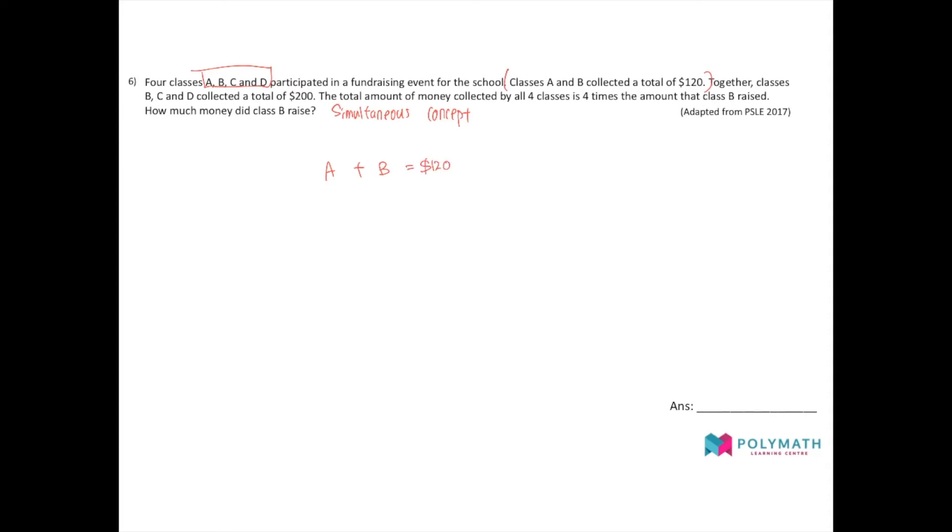Together, classes B, C, and D collected a total of $200. So you are going to change English to mathematics by forming equations like this. So that will be equal to $200.